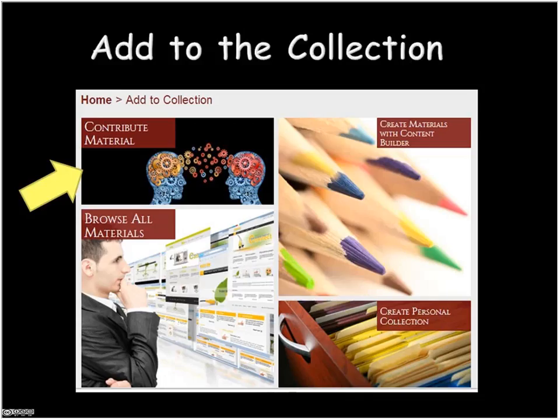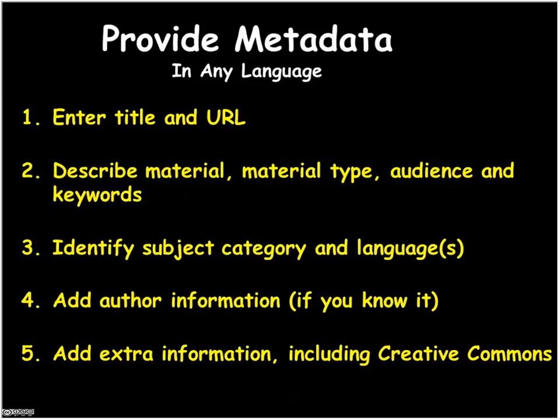For those of you with materials you'd like to contribute to Merlot and share with other people, there's a link on the menu bar and a tile on the homepage that says 'Add to the Collection.' You can click on the 'Contribute Material' tile to be taken to a wizard. When you provide the metadata for contributing a material, it's five steps with only a few required fields — obviously title and URL, description, material type, and the audience whether it's K-12, higher education, graduate, or professional. We encourage you to put in as many keywords as possible so other people can find the material quickly and easily. You can also put in technical format, whether it's an app and runs on iOS or Android, whether there's a Creative Commons license, or if there's a cost.